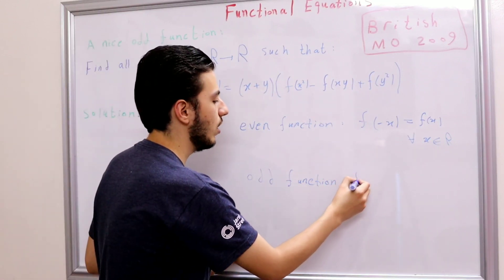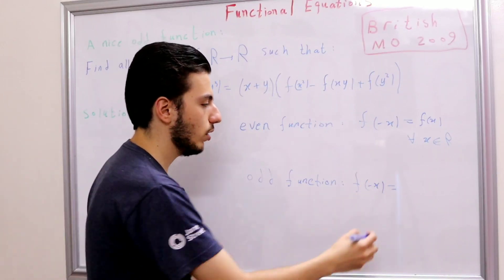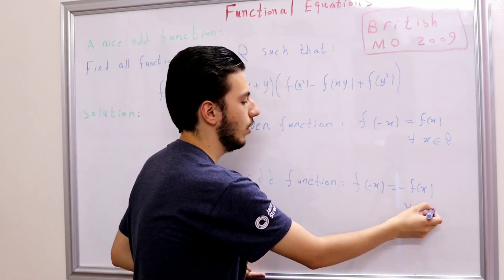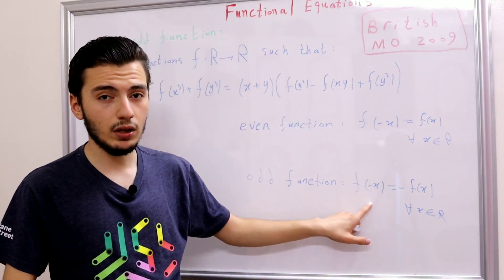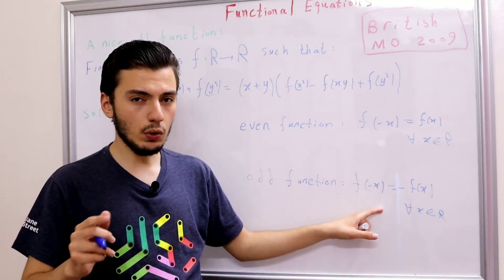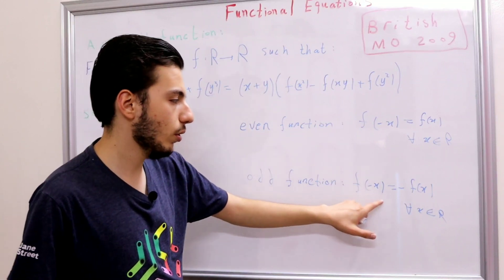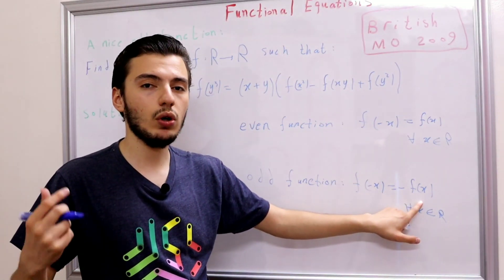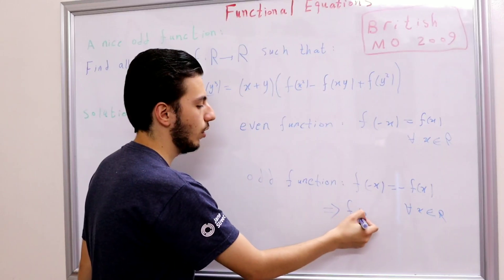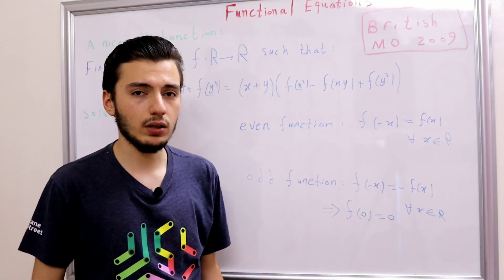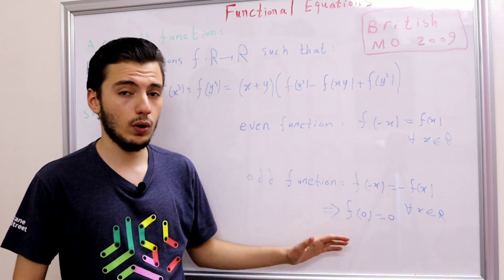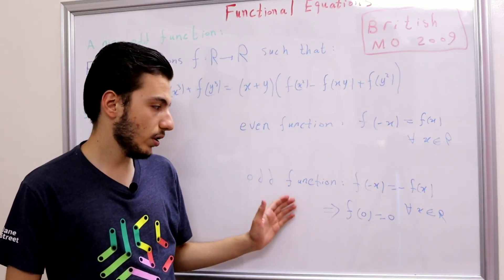What about odd functions? We call a function f odd if it satisfies f(-x) = -f(x) for all real numbers x. So f(-3) = -f(3). Now if you plug in 0, you get f(0) = -f(0), which means f(0) = 0. So the nice thing is: if f is an odd function, then f(0) = 0. Keep that in mind — once you prove your function is odd, you immediately have f(0) = 0.